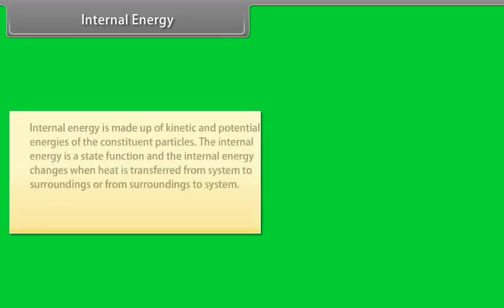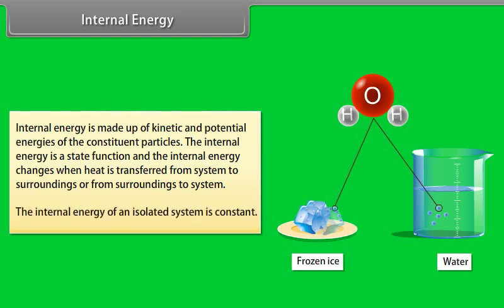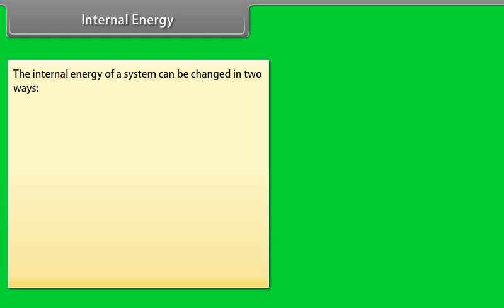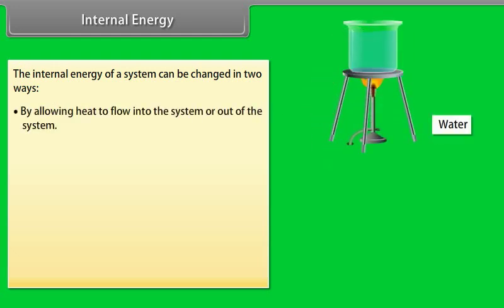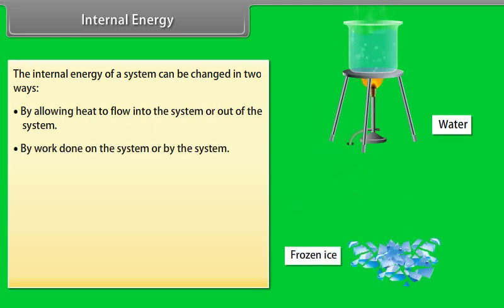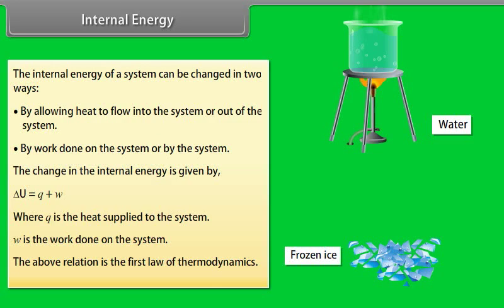Internal energy is made up of kinetic and potential energies of the constituent particles. It is a state function, and changes when heat is transferred between system and surroundings. The internal energy of an isolated system is constant. It can be changed by allowing heat to flow into or out of the system, or by work done on or by the system. The change in internal energy is given by: delta U equals Q plus W, where Q is the heat supplied and W is the work done on the system. This is the first law of thermodynamics.